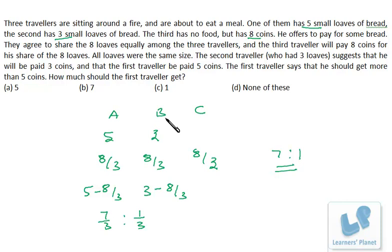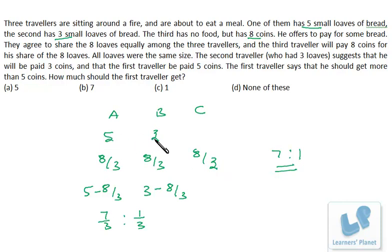Many people mistakenly distribute in the ratio 5:3, but this is wrong. The payment should be based on how much bread each person is giving to C, not their total holdings. The correct ratio is 7:1, so 7 rupees go to A and 1 rupee goes to B. A simple yet conceptual problem — I hope you are clear.